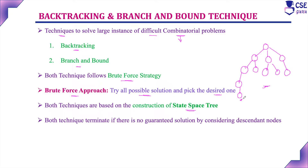Backtracking will try to provide only the feasible solution, not an optimization solution. Backtracking cannot be implemented for optimization problems. But branch and bound technique will try to provide the solution for optimization problems.